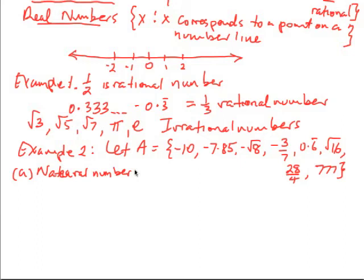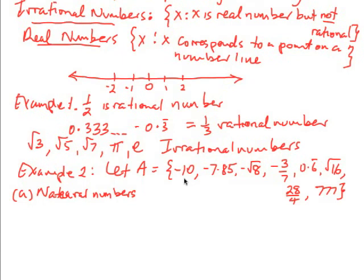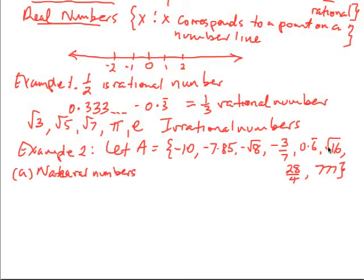Which ones in set A are natural numbers? Remember, natural numbers are the counting numbers. None of the negatives qualify. What about square root of 16? That means the positive square root of 16 — a number multiplied by itself gives 16 — that's 4, which is certainly a natural number. 28 divided by 4 equals 7, which is a natural number. And 777 is certainly a natural number.